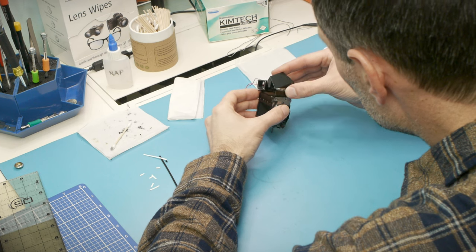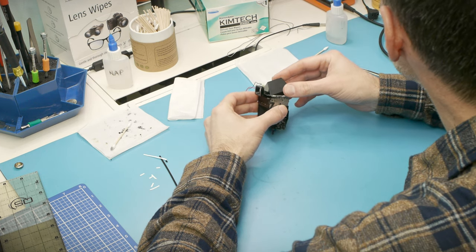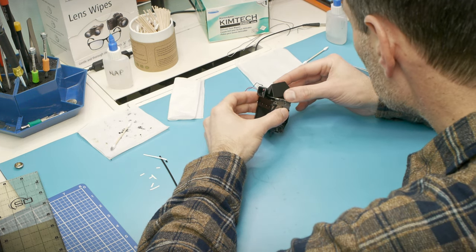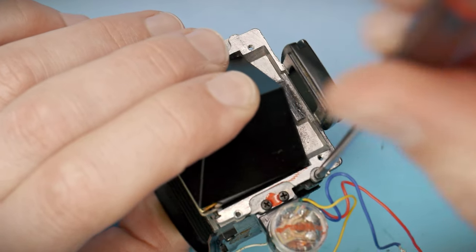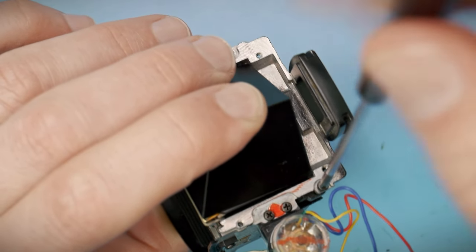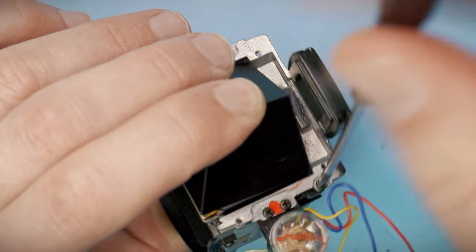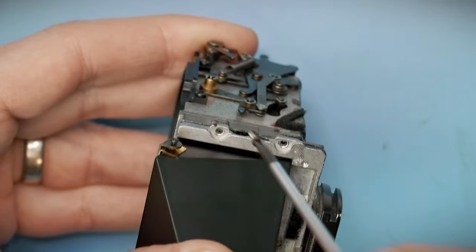Pop the viewfinder frame back onto the mirror box, and this unit is ready to go back in the camera. It's a fair bit of work for a part of the camera that wasn't even broken to begin with, but hopefully this will set the camera up for a long and happy future.